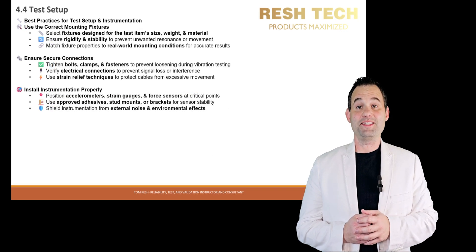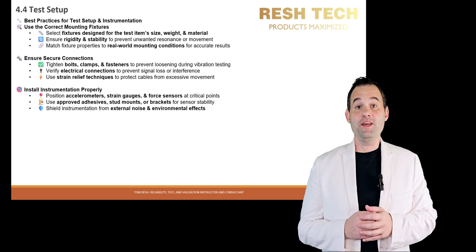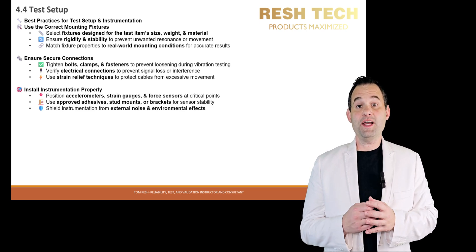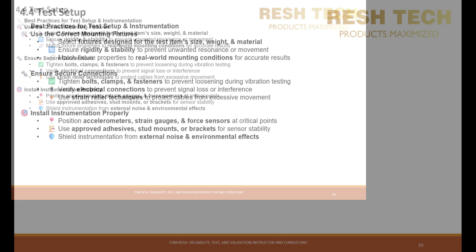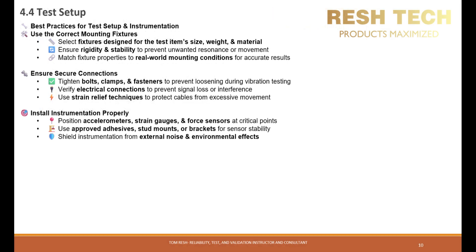Before starting a test, the test item should be mounted to represent its operational use. This includes using the correct mounting fixtures, ensuring secure connections, and installing instrumentation properly. For example, for loose cargo tests, proper fencing and placement are crucial to simulate real-world conditions in large assembly transport tests.